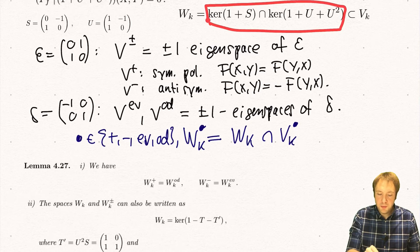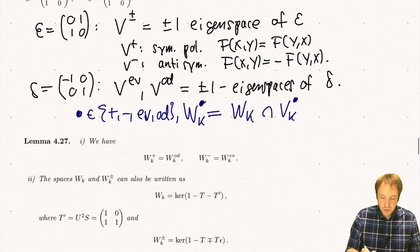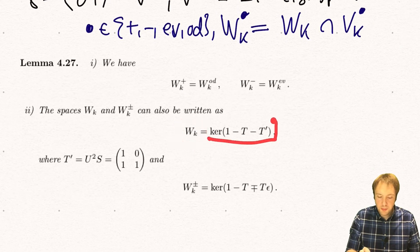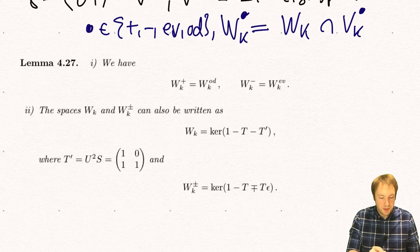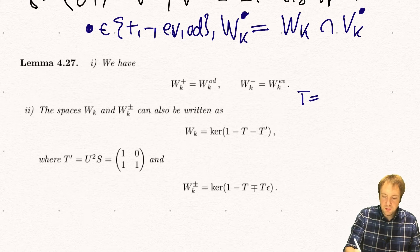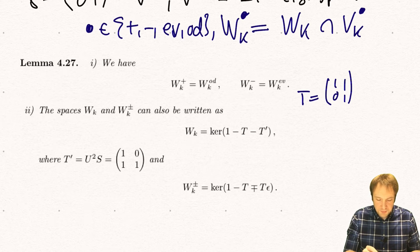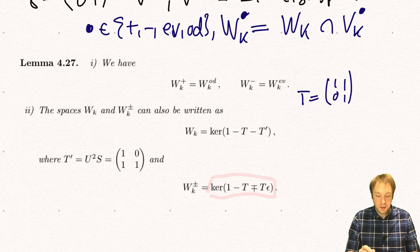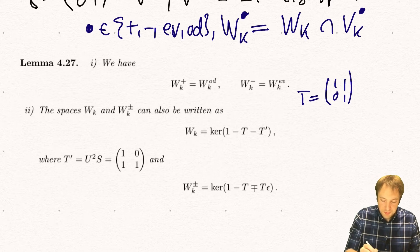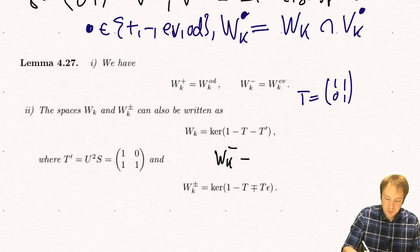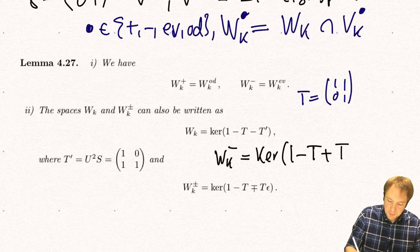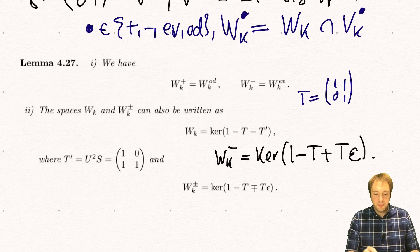Also, instead of having these two conditions — vanishing under 1+S and 1+U+U² — one can show that one just needs one condition. The statement is that Wk is the kernel of the action 1-T-T', where T' is the transpose of matrix T (which is [1,1;0,1]). Also the subspaces Wk-plus and Wk-minus can each be written using one single equation: Wk-minus is the kernel of 1-T+T*epsilon. So these are just other, easier-to-use descriptions for the spaces Wk-plus and minus.